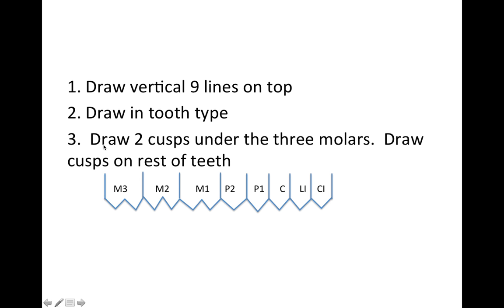Step three, we're going to draw two cusps under the three molars. There's one cusp and a second cusp for each molar, and so on. Then we're going to draw the cusps on the rest of the teeth — premolars we'll draw the cusps in and then proceed over to the central incisor.